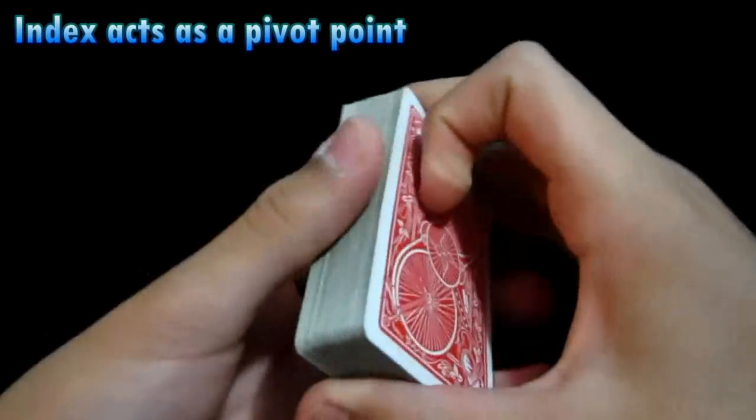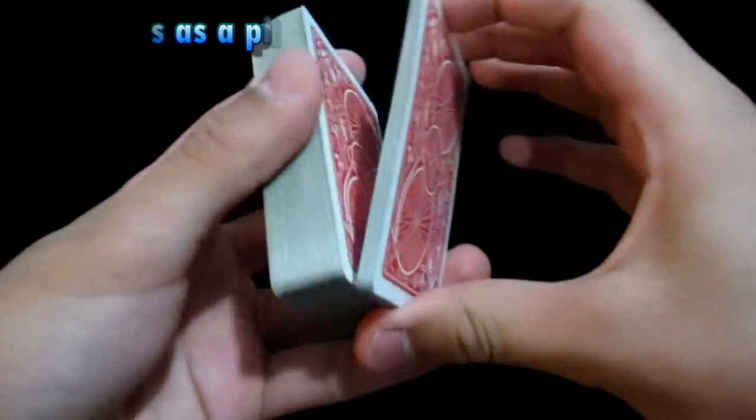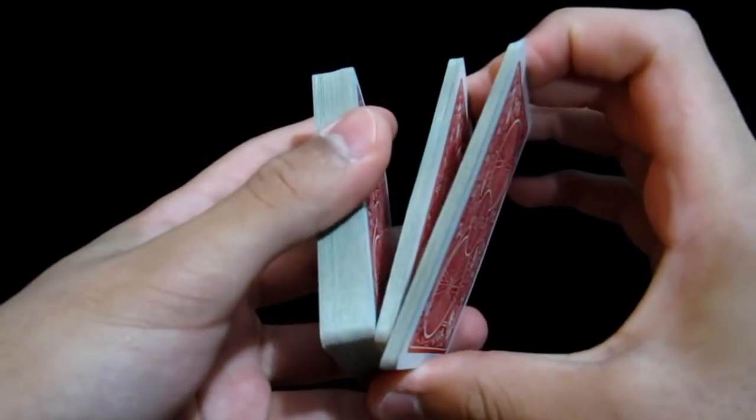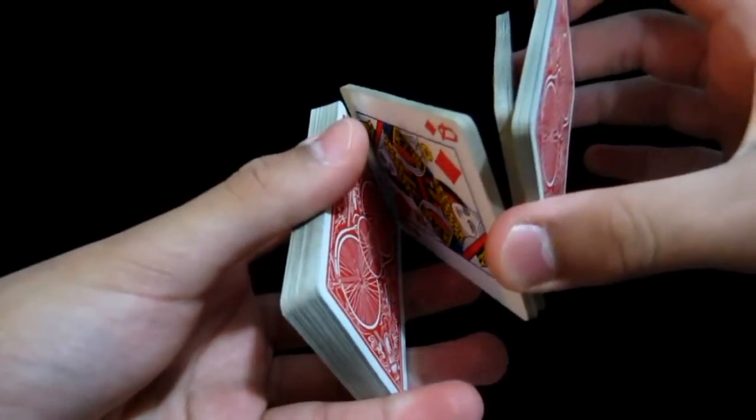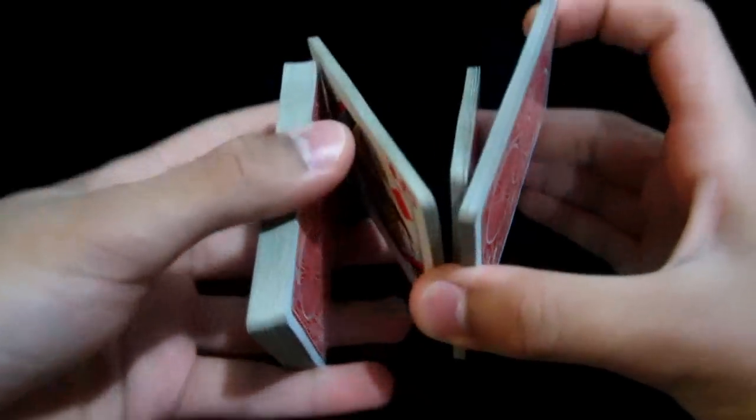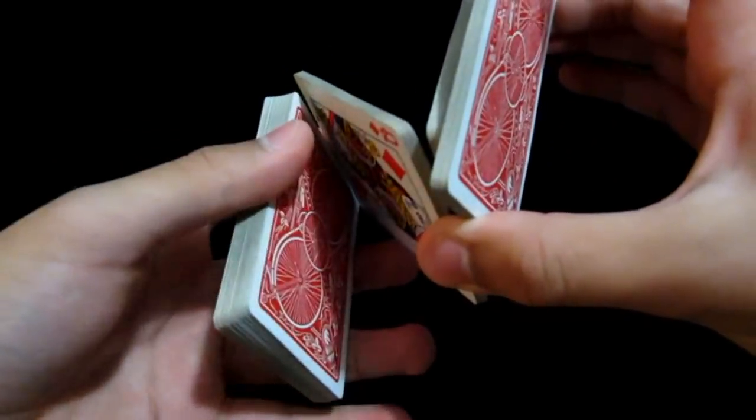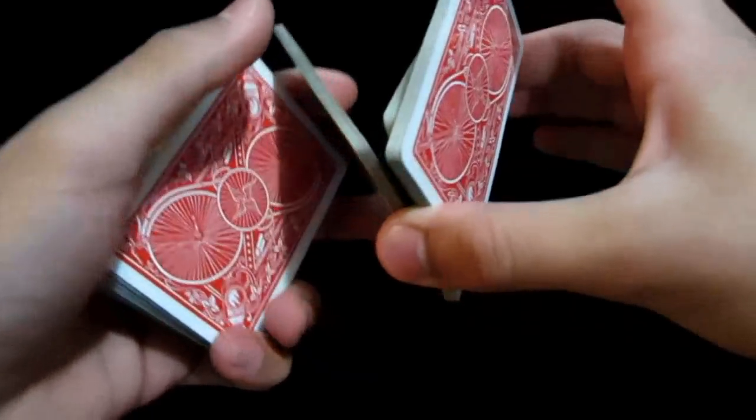So you go ahead and split one just like that. So now you've got three packets, and the one with your thumb is actually pivoting on your index. Now you're going to transfer this grip into a normal mechanic's grip so it does not fall.